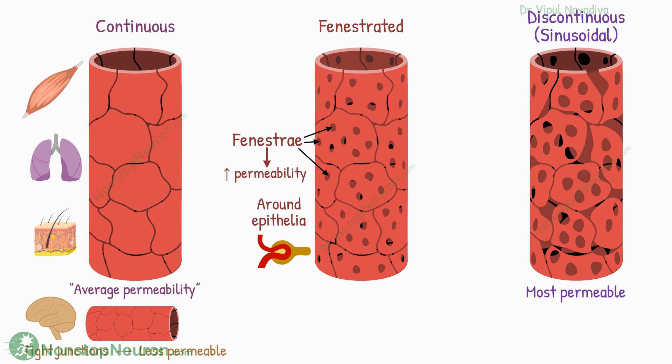Finally, the sinusoidal or discontinuous capillaries are the most permeable. In addition to fenestrae, they have large gaps between endothelial cells. They are found in sinusoids. For example, in bone marrow, the gaps between endothelial cells help newly formed blood cells enter the circulation.